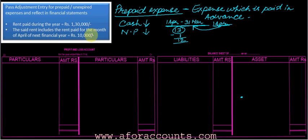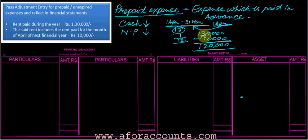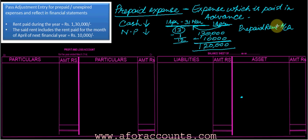This rent includes the rent paid for the month of April of the next financial year — ten thousand. So actually what is paid is one lakh thirty thousand, and ten thousand is for the next month. I need to remove ten thousand; one lakh twenty thousand is what relates to the current financial year. The entry will be: Prepaid Rent Account debit to Rent Account — ten thousand.